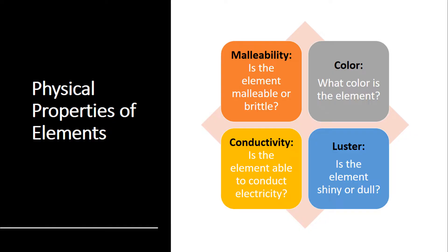Conductivity is the third physical property that you will be analyzing in this video. If an element can conduct, it usually is able to conduct both electricity and heat. When an element can conduct electricity, it means that electric current can flow easily through the element — that means electrons can flow freely through the material. We'll be using a conductivity tester to determine whether or not the element can conduct. If the light bulb turns red, the element is conductive; if it does not, it means it cannot conduct electricity.